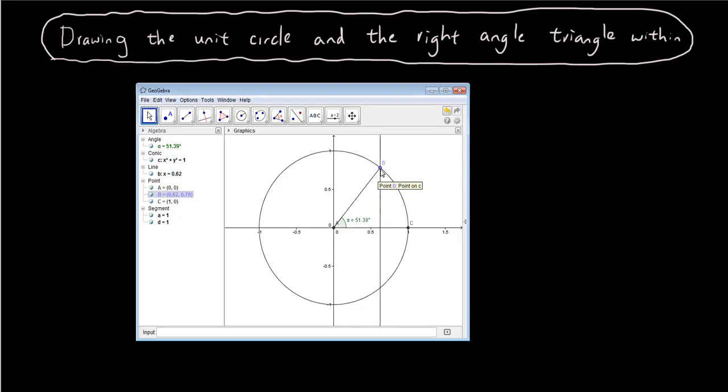From point A to B down to the x-axis back to point A. This is our right angle triangle.